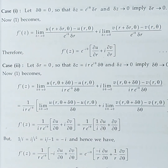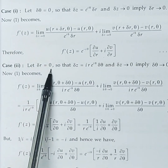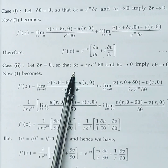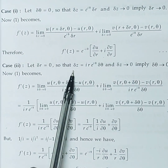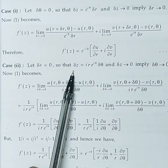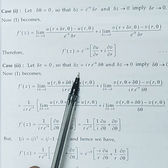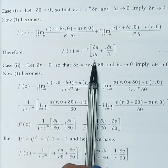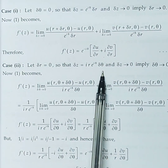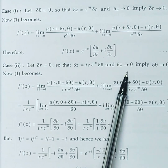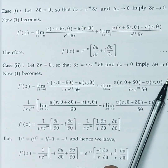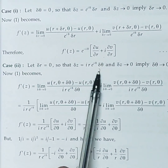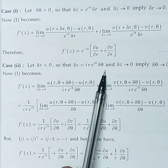Case 2: Δr = 0. Then Δz = ir·e^{iθ}·Δθ, so Δz → 0 implies Δθ → 0. Since Δr = 0, the numerator terms have only r (not r + Δr), and we substitute ir·e^{iθ} for Δz.